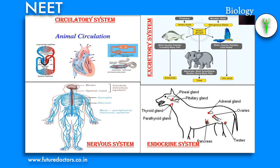Circulatory system: the circulatory system is responsible for the transport of materials in the body. It consists of fluid, blood vessels and the heart. In insects such as prawn and pillbug, blood is colorless and contains hemocyanin, a copper-containing pigment. While in vertebrates, blood contains hemoglobin, which is an iron-containing pigment.